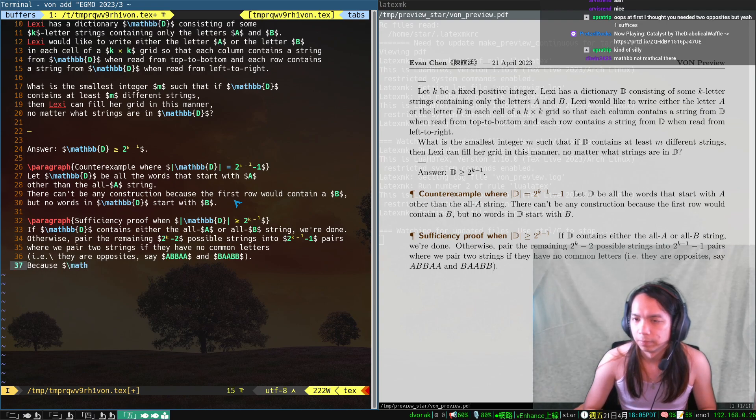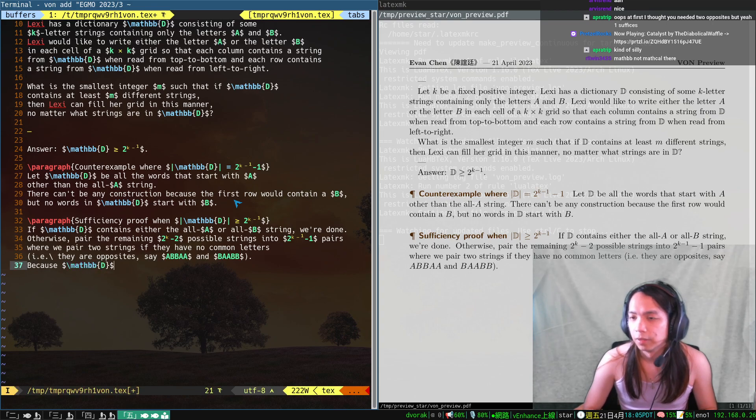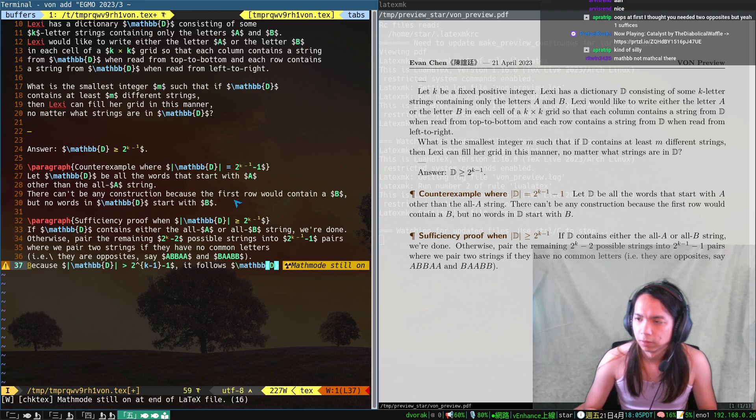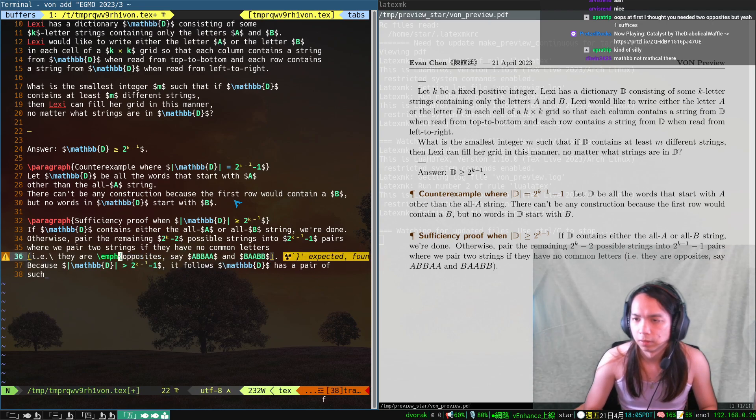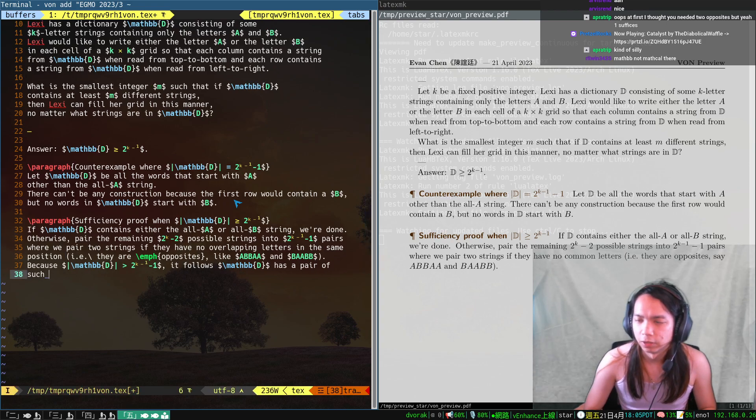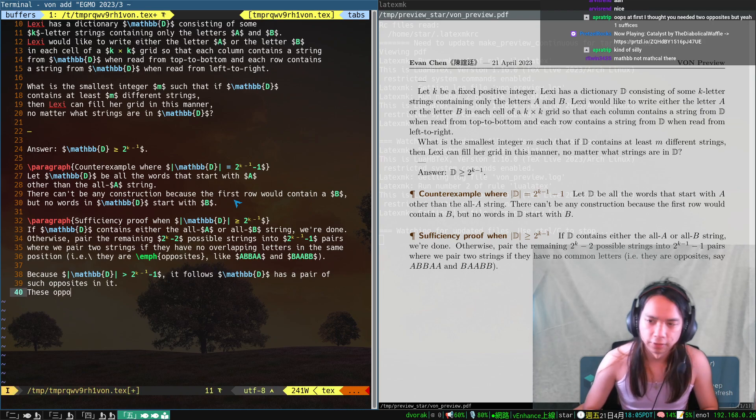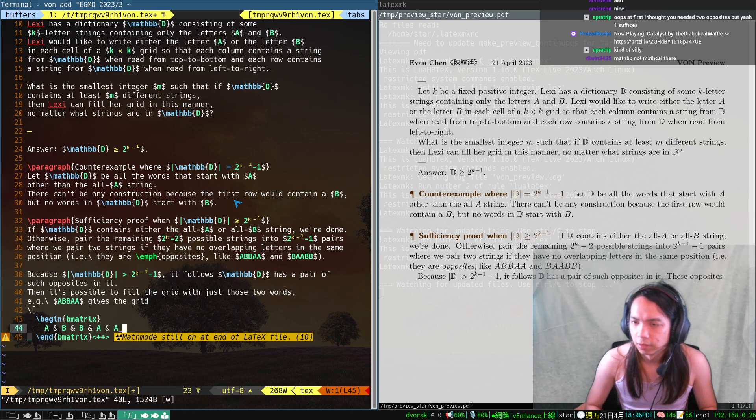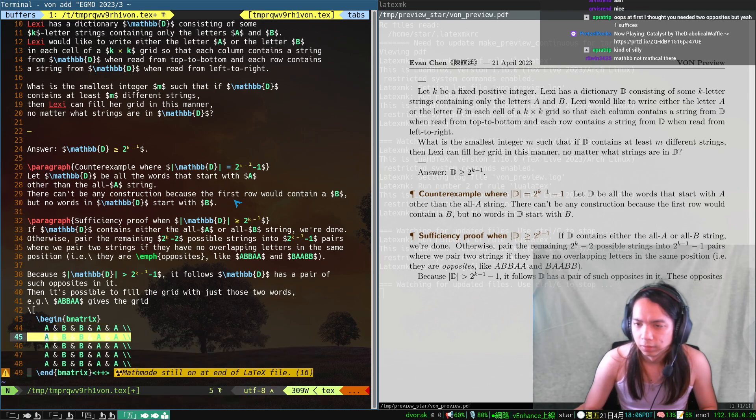How do I—i.e., they are opposites. Because D at least—if they have no overlapping—well, overlapping letters in the same place—pair of such opposites, then it's possible to fill the grid with just those two words. E.g., ABB, BAA gives the grid. Their opposites construction is pretty cute. I have to—I'll give it that.